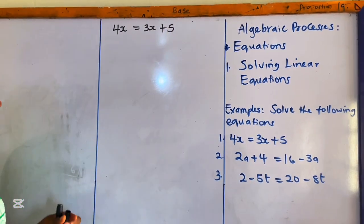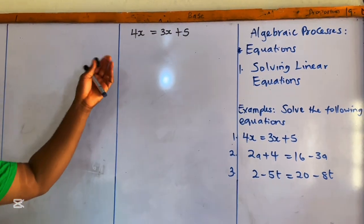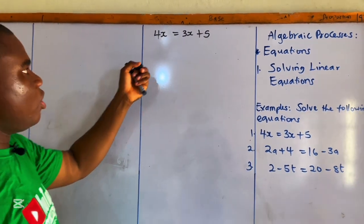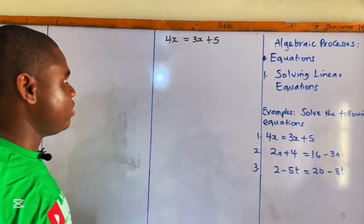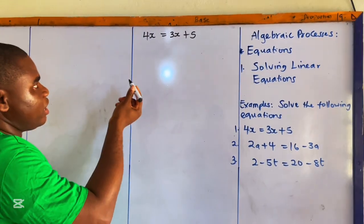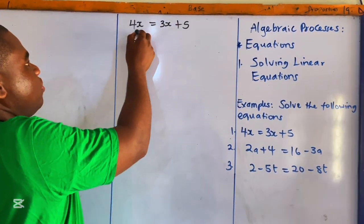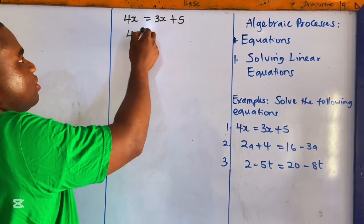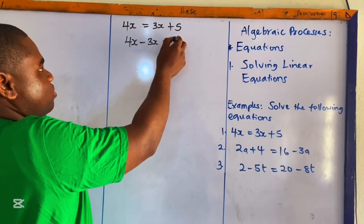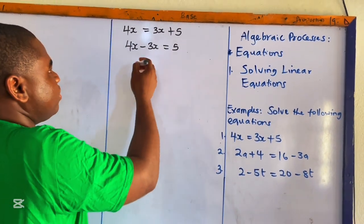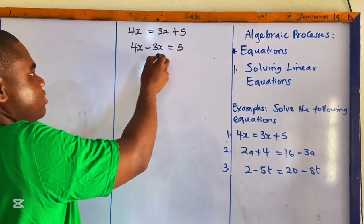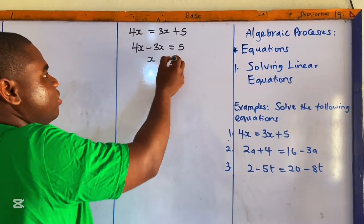There are two ways of solving this — we can collect like terms or use the balance method. Collecting like terms for the first one: 4x minus 3x equals 5, which gives us x equals 5.